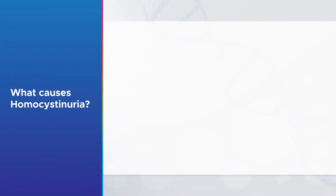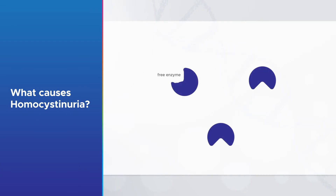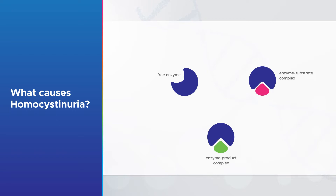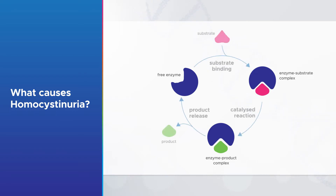There are lots of chemical reactions going on in our bodies all the time, and enzymes help speed up or catalyse these chemical reactions. Enzymes attach themselves to certain molecules such as homocysteine and alter them in very specific ways, allowing them to be quickly converted into other chemicals such as cysteine.